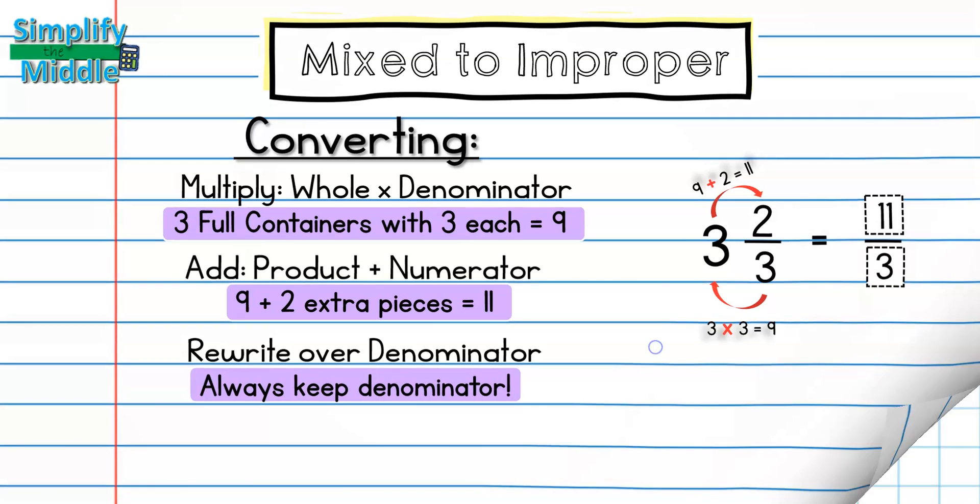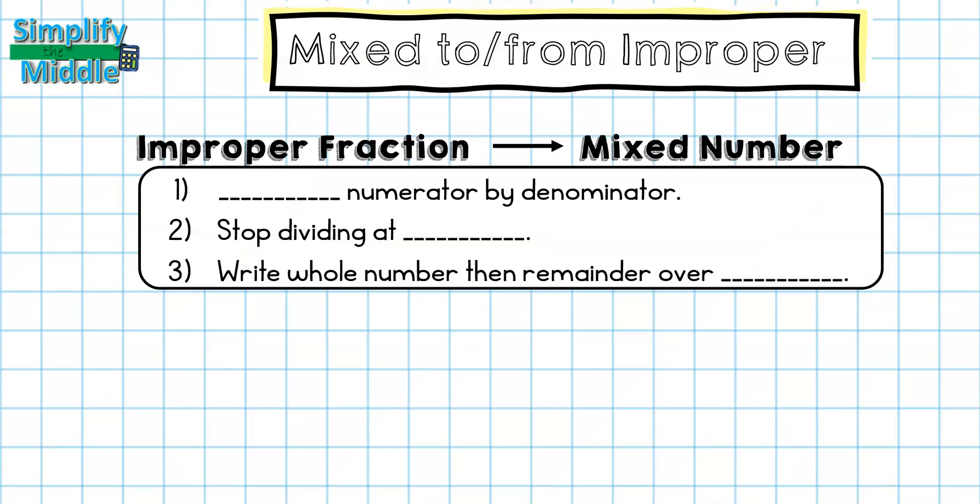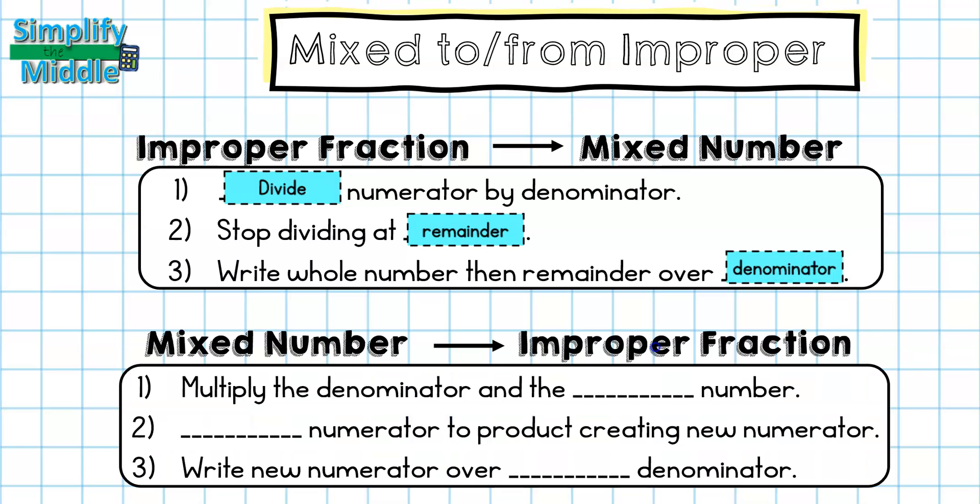Let's recap. To go from an improper fraction to a mixed number, you're going to divide the numerator by the denominator. You'll stop dividing at the remainder, then you'll write the quotient as a whole number and the remainder over the denominator that you started with. For mixed number to improper fraction, you'll multiply the denominator and the whole number, then you'll add the numerator to that product creating a new numerator.